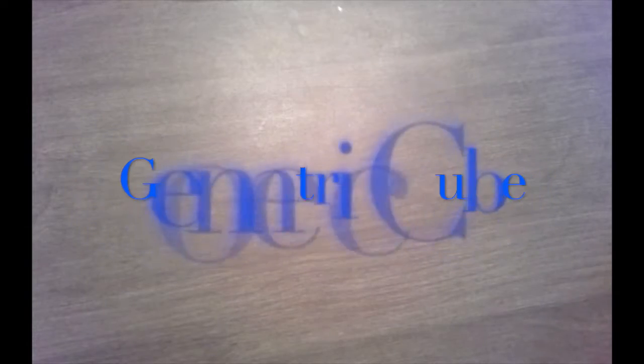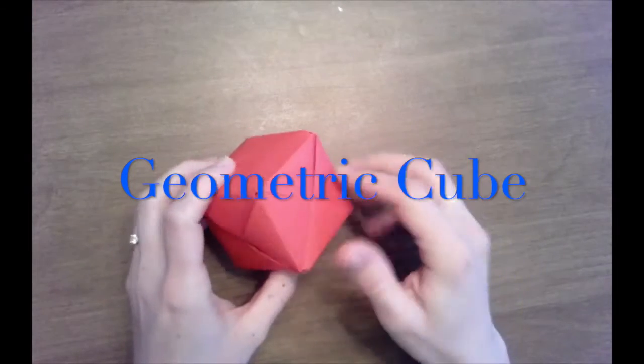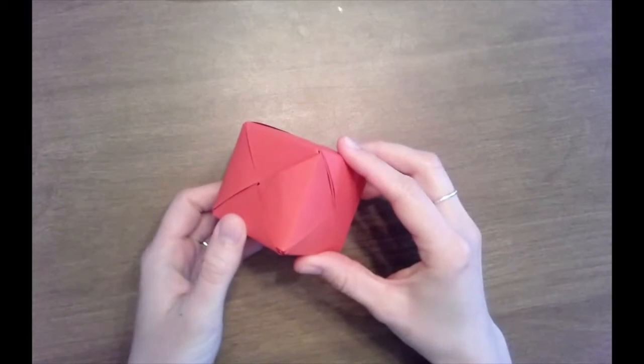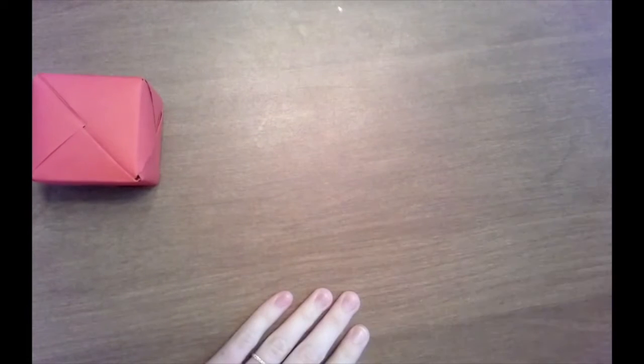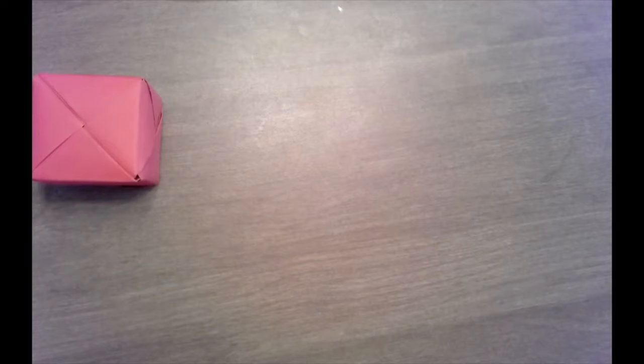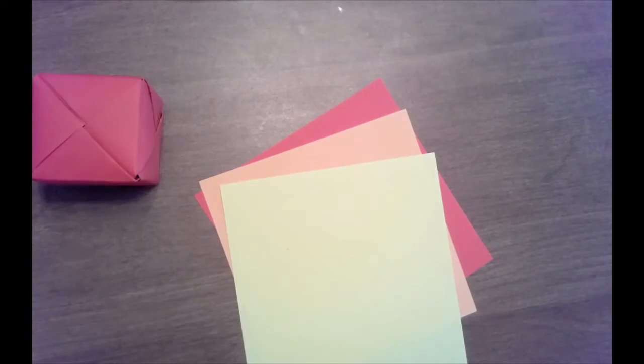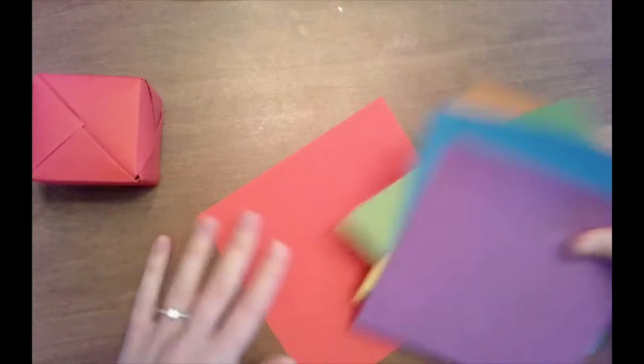Today we are going to start with a simple geometric cube. Now this cube is created using six different pieces of paper all put together like a puzzle to create the cube. Now we are going to start with this basic cube. So for today all you will need for your materials are six square pieces of paper. You can do any colors that you would like. You can keep it all the same. Just use whatever paper you have. Just remember it has to be square. Let's get started.